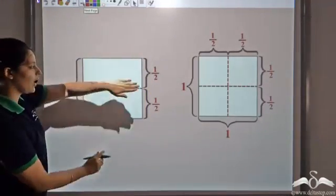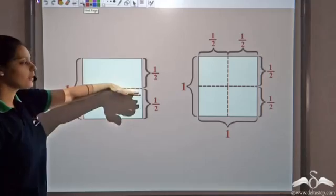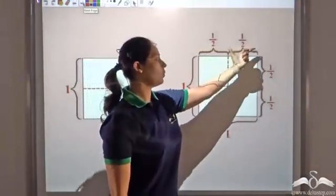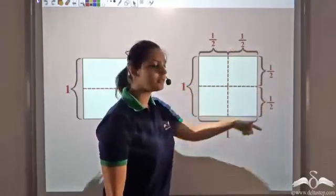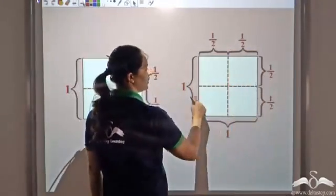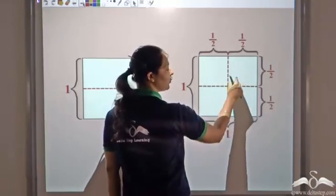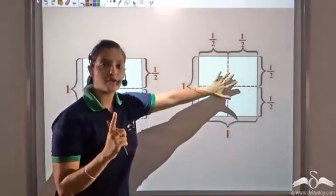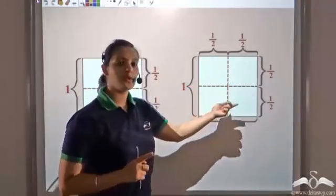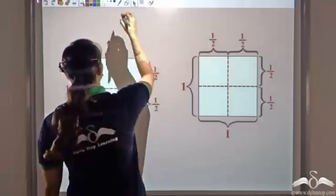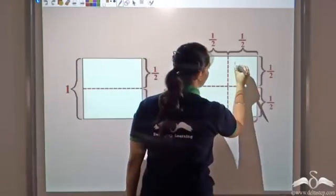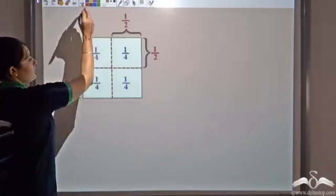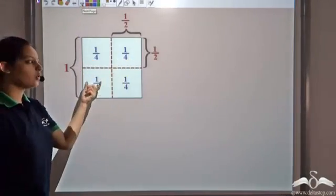Now let's say you have this sheet of paper divided into half. Again you divide it into half, giving 1 by 2 and 1 by 2 on each side. Now I see that this piece of paper has been divided into 4 equal parts: 1, 2, 3, 4. Since 1 unit is divided into 4 equal parts, each part can be represented by 1 by 4.